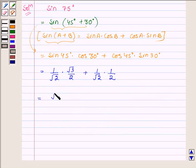So this is further equal to root 3 upon 2 root 2 plus 1 upon 2 root 2. Hence the value of sine 75 degree is equal to root 3 plus 1 upon 2 root 2.